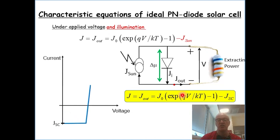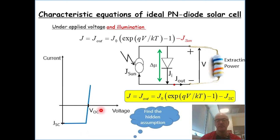And what it does — the introduction of light shifts the curve downwards. Here we have the short circuit current at V equals zero, and this would be the open circuit voltage when there is no current flowing. And somewhere on the way here in the slide, there is a hidden assumption — you're most welcome to find it.